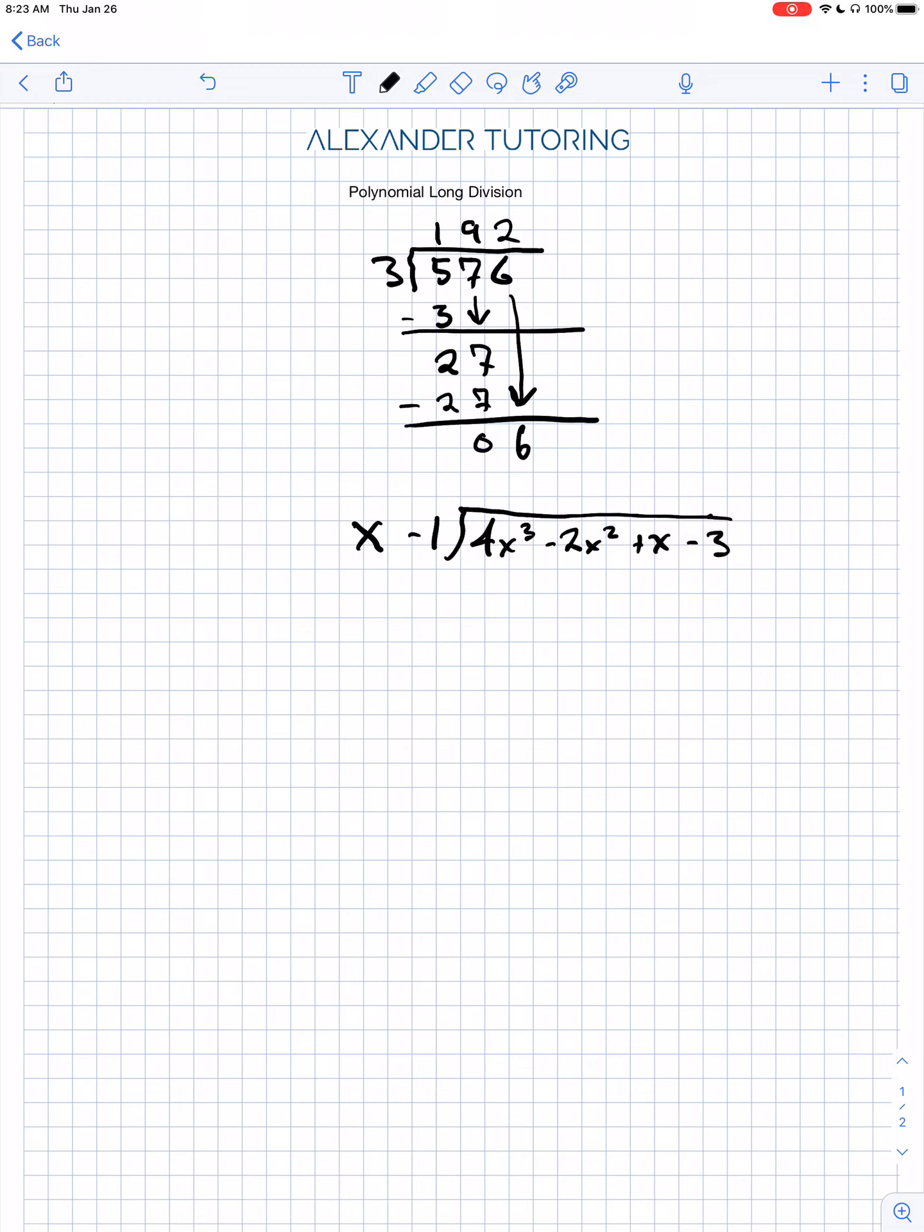Okay. So just like regular long division, we're going to start dividing here. But what's a little different is this is confusing because it's x minus 1. How the heck do you divide that? Well, we're going to ignore the minus 1 and we're just going to use the leading x term and we're going to divide that into this first term here for 4x cubed. So how many times does x go into 4x cubed?